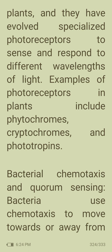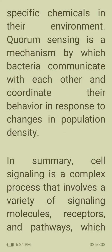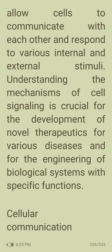Bacteria use chemotaxis to move toward or away from specific chemicals in their environment. Quorum sensing is a mechanism by which bacteria communicate with each other and coordinate their behavior in response to changes in population density. In summary, cell signaling is a complex process involving a variety of signaling molecules, receptors, and pathways that allow cells to communicate and respond to stimuli, which is crucial for developing novel therapeutics.